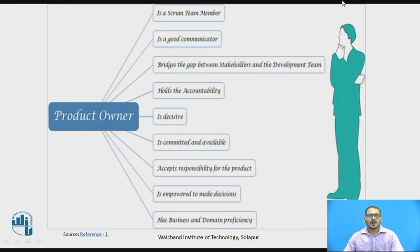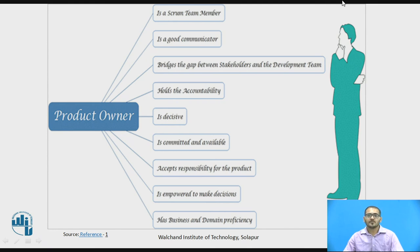In order to succeed, Product Owners require the right skill set. The Product Owner is a Scrum team member and a good communicator. He bridges the gap between stakeholders and the development team and holds accountability. He is available and committed, accepts the responsibility of the product, and has business and domain proficiency.